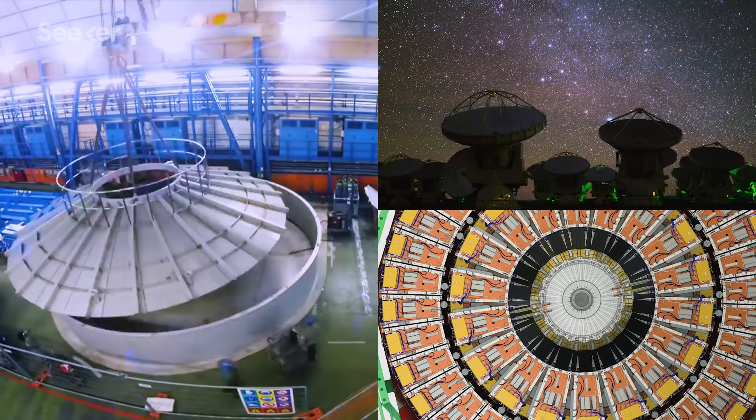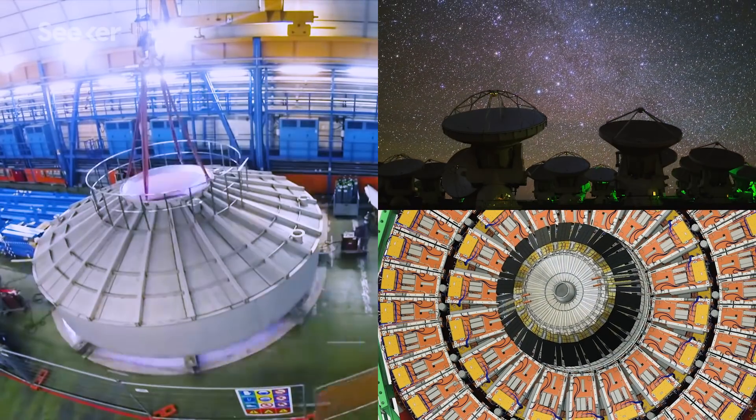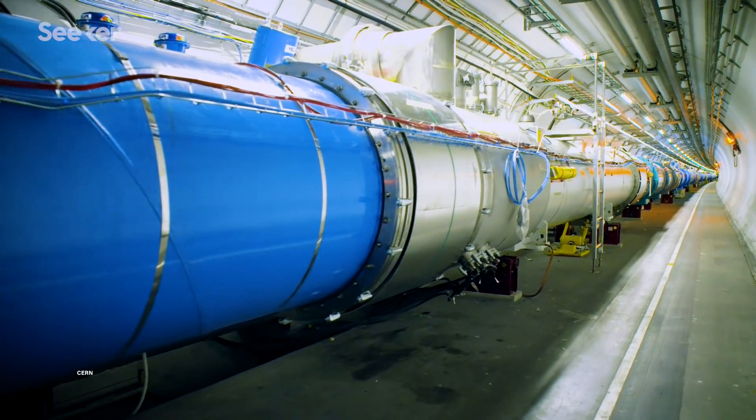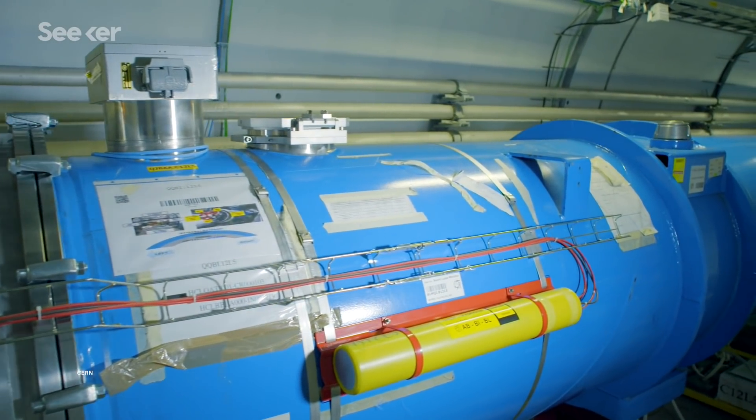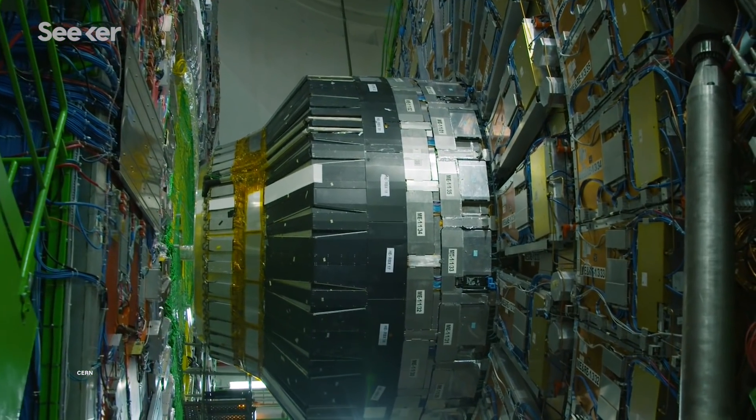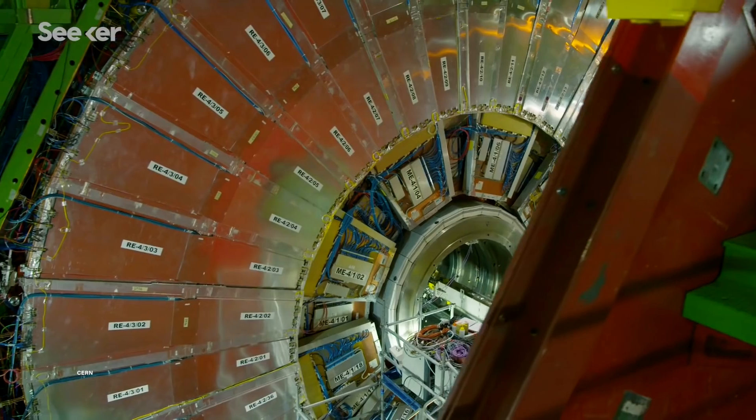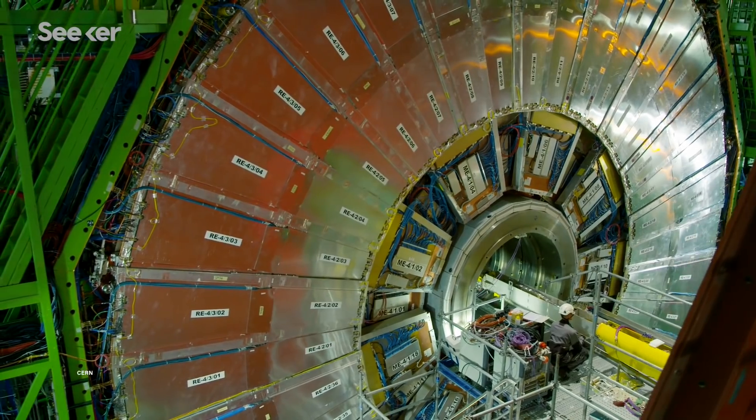Experiments look for dark matter in three ways. You can make it, break it, or shake it. So the experiments that make it try to produce dark matter particles in ultra-high energy collisions of proton beams at accelerators, like in the Large Hadron Collider. And those experiments look for some evidence that dark matter particles were produced and flew out of the detector.